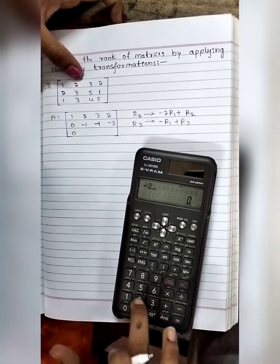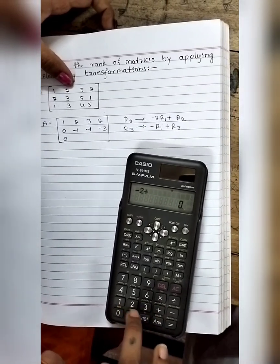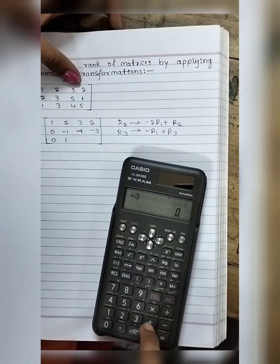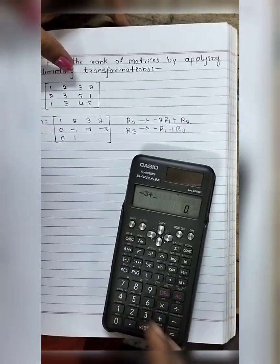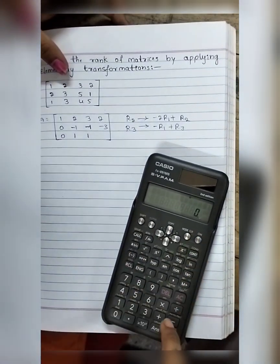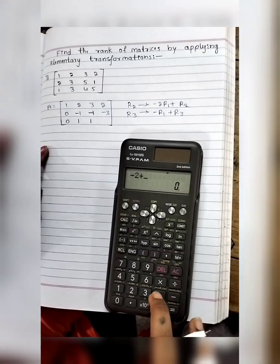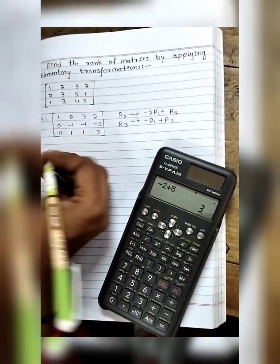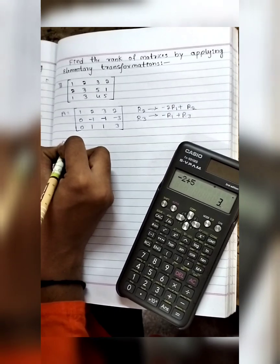Next, minus 2 plus 3, we get 1. Next, minus 3 plus 4, we get 1. Minus 2 plus 5, we get 3.